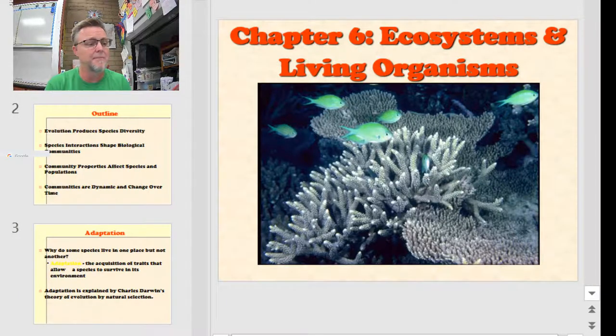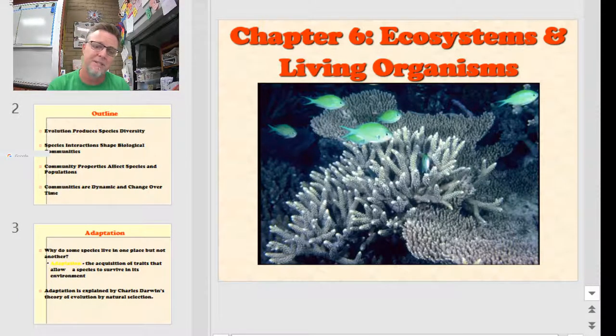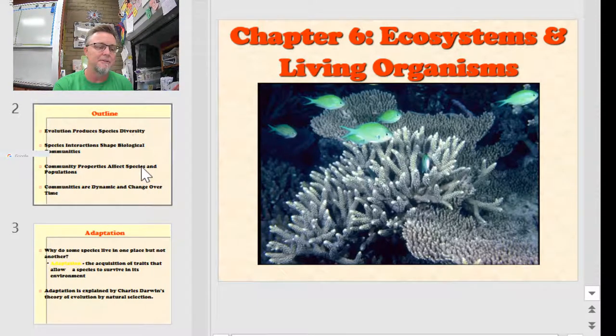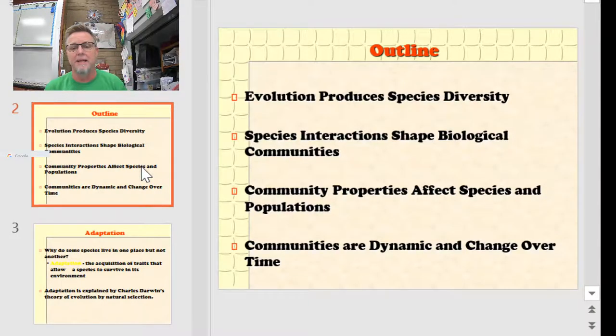Hey CW Apes, Mr. Kennedy here. These are your chapter 6 lecture notes on ecosystems and living things. Today we're going to dive into just a few simple ideas relating to the evolution and production of species diversity, species interactions and how they shape a biological community, some community properties and how they affect species populations, and then how communities can change over time.